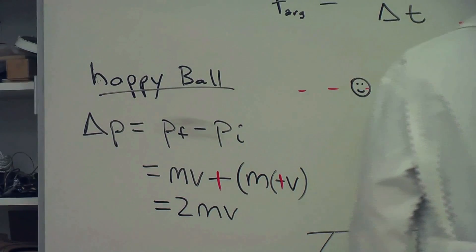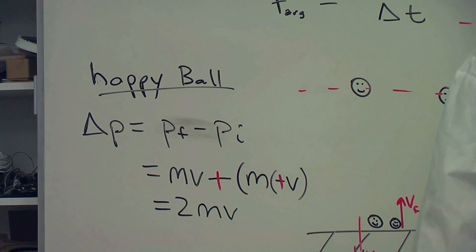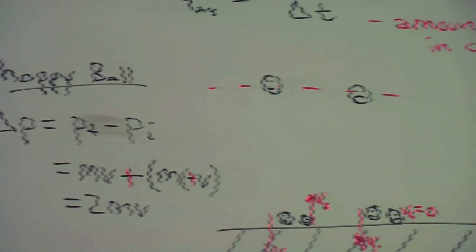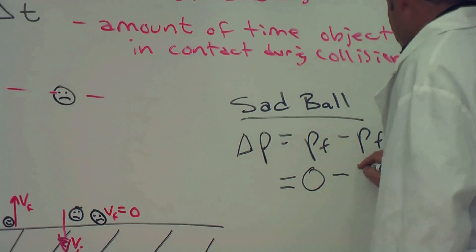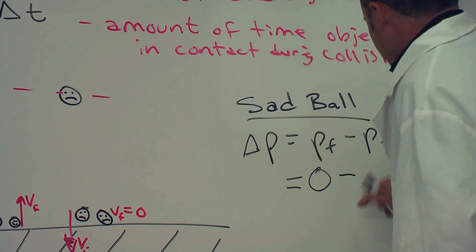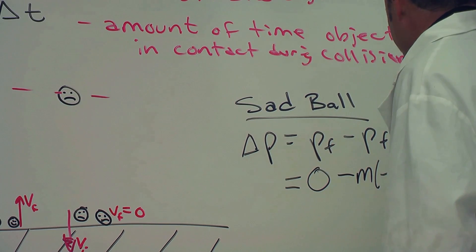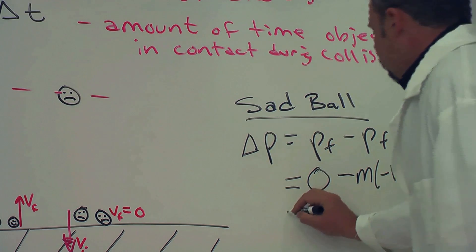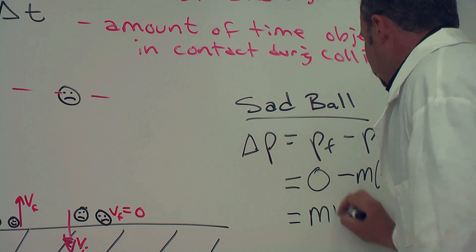Now for the sad ball, it's a different story. Change in momentum, p final minus p initial. Well, we have, in the final situation, we have zero because it's not moving. But then initially, it's the same as the happy ball. It's mass times a negative v here. So we just get mv.